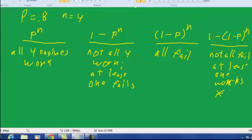And then 1 minus (1 minus p) to the n is the probability that not all fail, at least one works. And this is our answer. That's what we want to find out because that's going to tell us the probability that the airplane will actually get back.